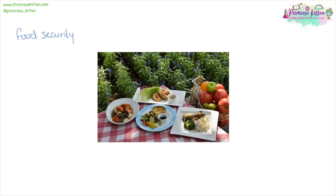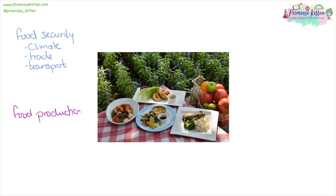Food security is how sure we are that we're going to have food on our table — how sure we are that our supermarkets are going to be full of things for us to buy. If as a country we don't produce much of our own food, we have to buy it in from other places, which means we depend on other countries, other people's climates, trade agreements, and transport arrangements getting the food across borders. Increasing our own food production will help ensure our food security — if we are producing our own food, we're not reliant on other people.